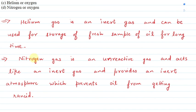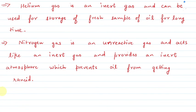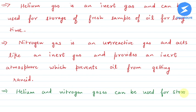So that means helium and nitrogen are both gases for the storage of fresh sample of oil for a long time. That means what will be our option? So we can write it as helium and nitrogen gases can be used for storage of fresh sample of oil for a long time.